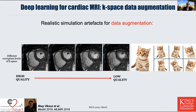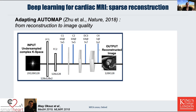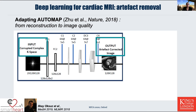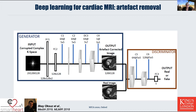We adopted the AutoMAP method by Zhu et al., which originally takes as input an undersampled complex k-space, learns basically the inverse transformation, and as output gets a reconstructed high-resolution image. However, in our case, the input is not undersampled k-space — it is a corrupted complex k-space that is fully sampled, and our output should be an artifact-corrected image. We added a discriminator to make this network more robust and applied it to our task.